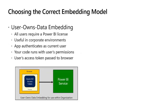When you use Power BI embedding you have to choose between one of two supported models. There's the user owns data embedding model, where you authenticate as the current user. When you call to the Power BI service API you do so on behalf of the current user, with delegated permissions that the user has consented for your application to use. When passing the security token back to the browser, you pass the Azure AD access token.